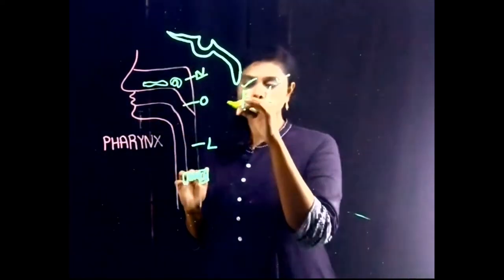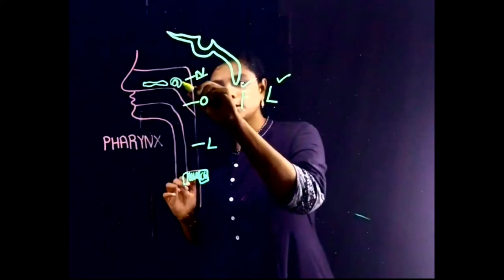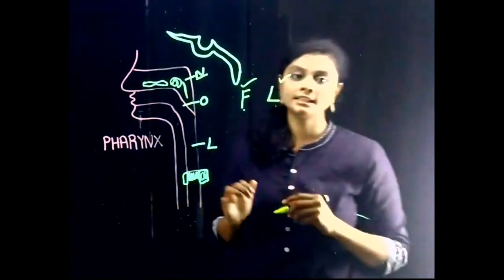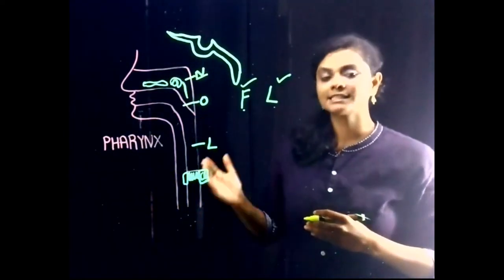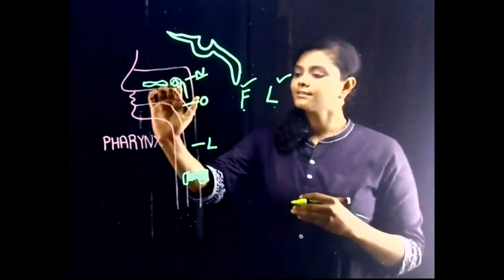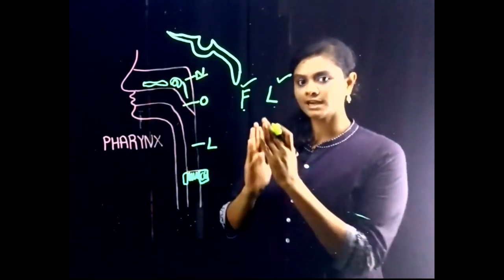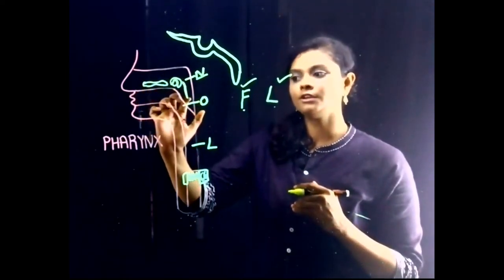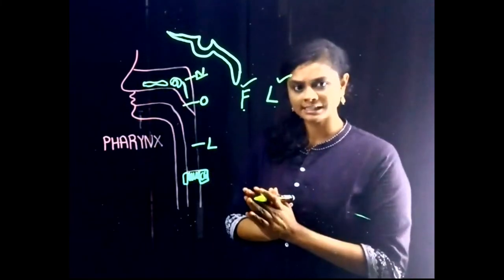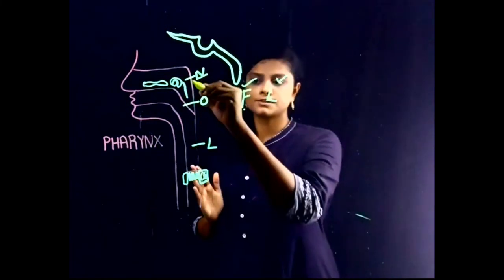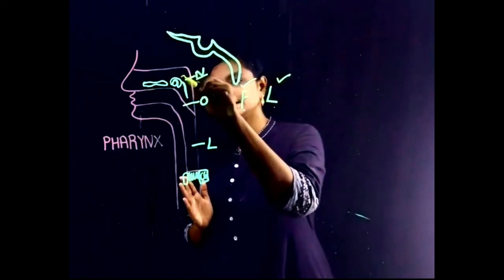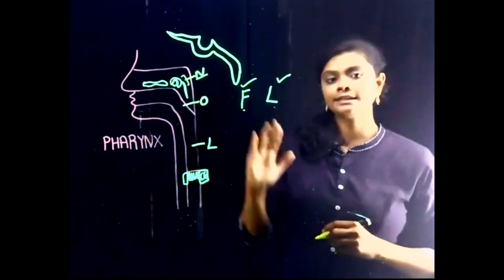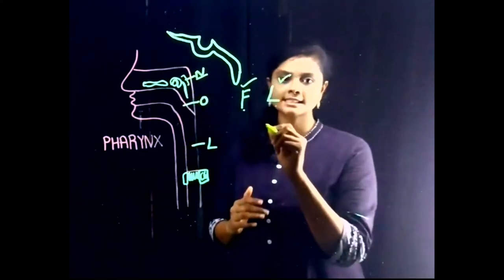Just behind the tubal elevation there is a vertical fold that runs down posteriorly from the tubal elevation. This vertical mucous membrane fold is named the salpingo-pharyngeal fold — it runs behind the tubal elevation, going down and becoming very slender. Just behind the salpingo-pharyngeal fold there is a slit known as the pharyngeal recess.